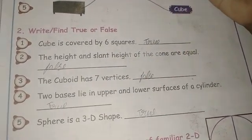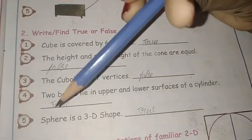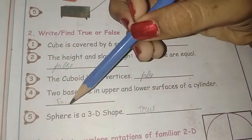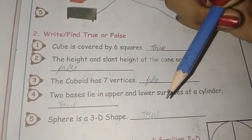It's true or false? Yeah, it's true. Next, sphere is a 3D shape. It's true or false? True, because sphere is a ball we play, so it's true. Sphere is a 3D shape, it's true.